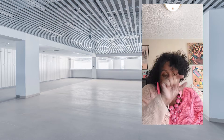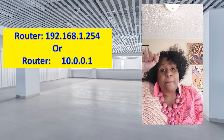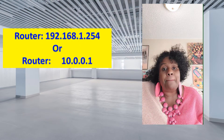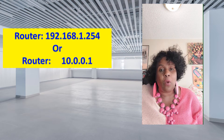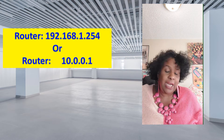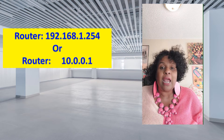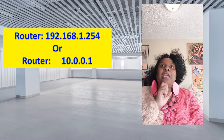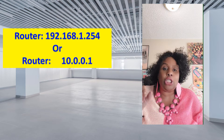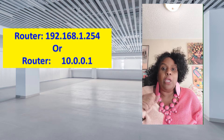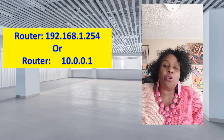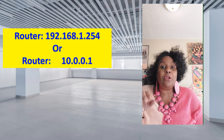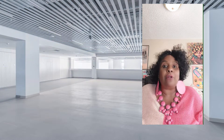This is for Apple users: you're going to see the word Router, and the number right by that is going to be your default gateway, or in other words, your router's IP address. It should start with either a 192 or a 10 — usually it starts with 192. Whatever it is, that is your router's IP address if it's by that word Router.